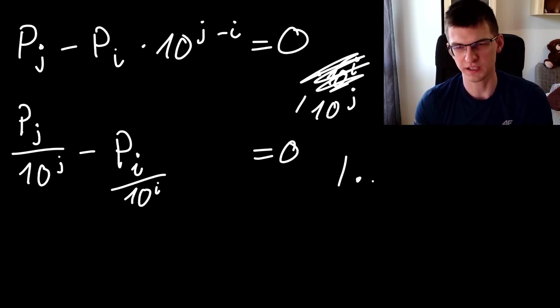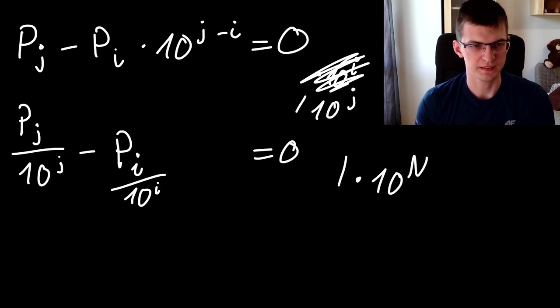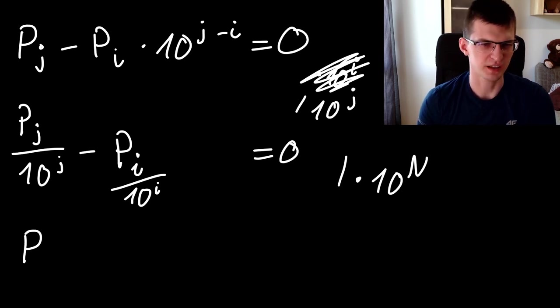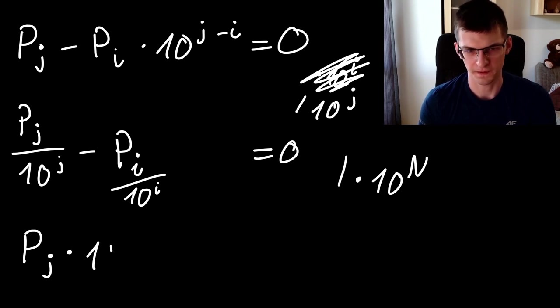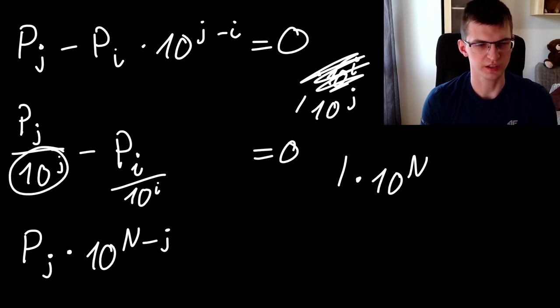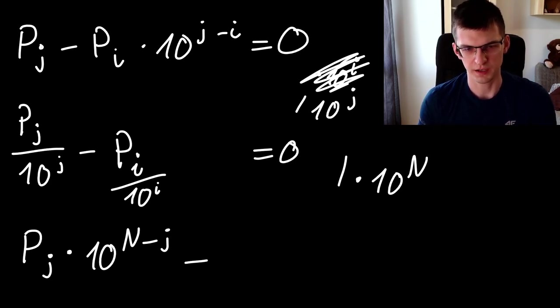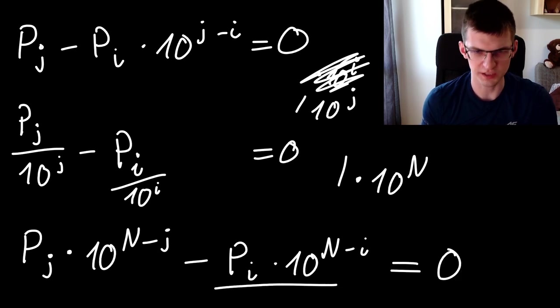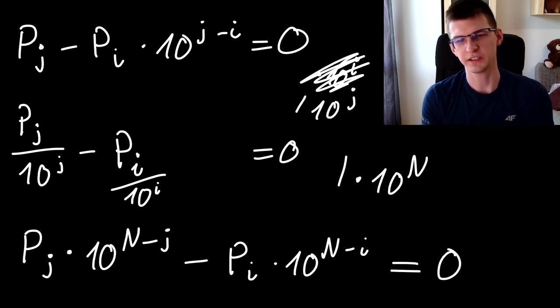And then what happens? I unnecessarily changed them into fractions. What happens is p of j times 10 to n minus j, so this was 10 to minus j and I multiplied by this, minus p of i times 10 to n minus i. That must be equal to 0, so this must be equal to that.